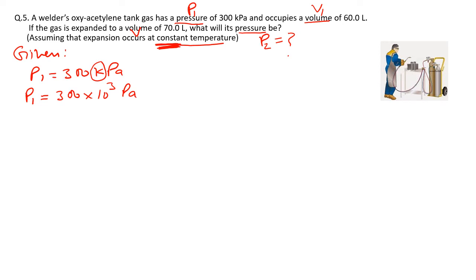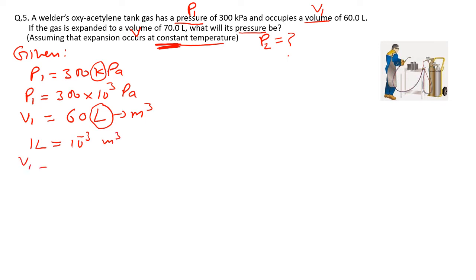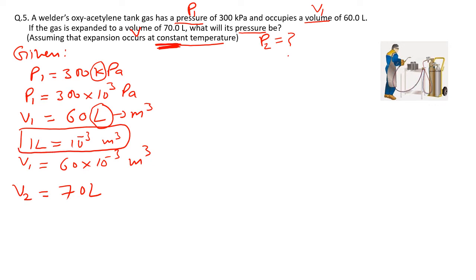Converting units: P₁ = 300 × 10³ Pascal. V₁ = 60 × 10⁻³ m³. V₂ = 70 × 10⁻³ m³. We need to find P₂. Since temperature is constant, we use Boyle's Law: P₁V₁ = P₂V₂.